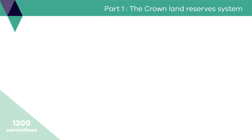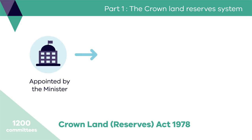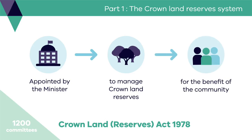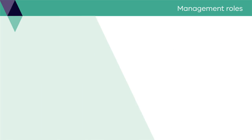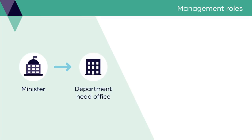Committees of management operate under the Crown Land Reserves Act 1978. The Minister or the Minister's Delegate appoints committees to manage Crown Land Reserves for the benefit of the community. The Minister appoints local representatives to help make sure that decisions made reflect community needs.